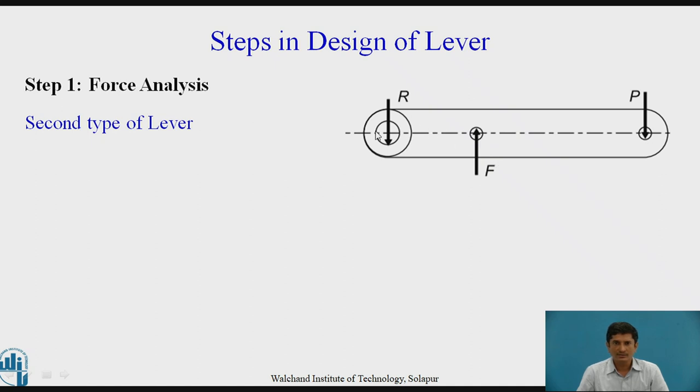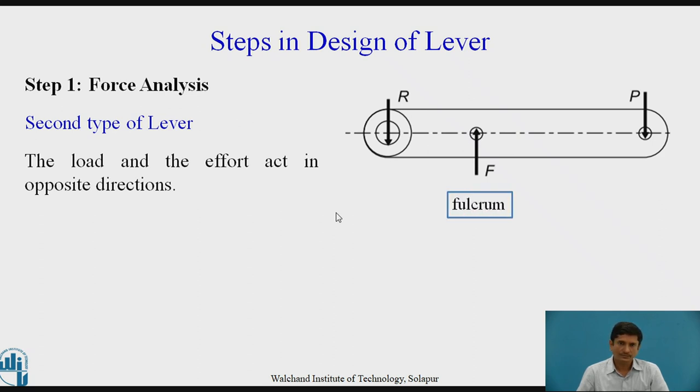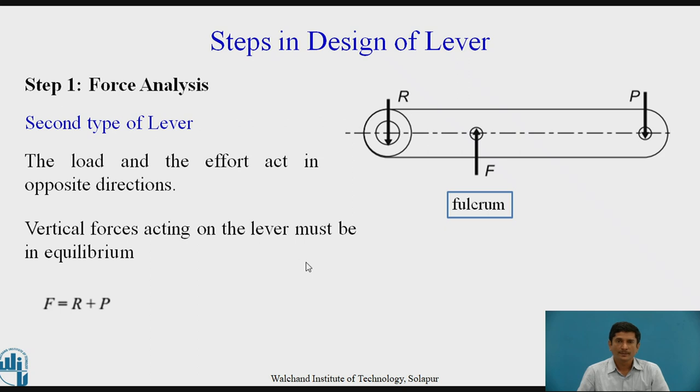F is in between R and P. The load and the effort act in opposite directions. This is the load upward vertically and P effort vertically downward. These are opposite in nature. The vertical forces acting on the lever must be in equilibrium. Same equation we need to use. F equals R plus P.